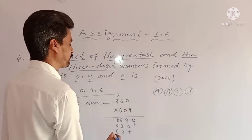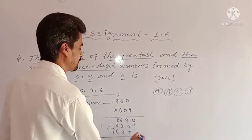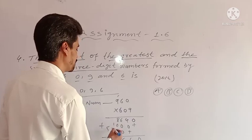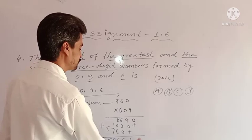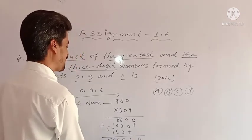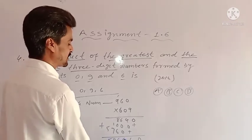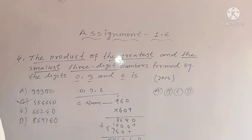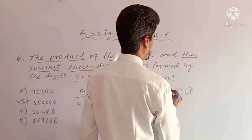Let's find out the product of 960 multiplied by 609. Carrying out the multiplication and addition: the result is 58,640. So the answer is 58,640. Option B is the correct answer. I am coloring option B because it is our correct answer.